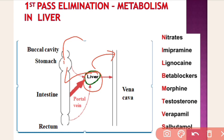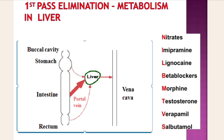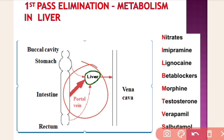First it reaches to the liver, then to the vena cava, then to the systemic circulation. In between, there is a metabolism called pre-systemic metabolism, first pass metabolism, or first pass effect. The drugs that show extensive first pass metabolism include nitrates, imipramine, lignocaine, beta blockers, morphine, testosterone, verapamil, and salbutamol.